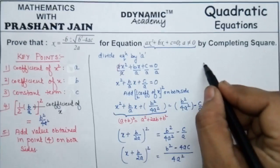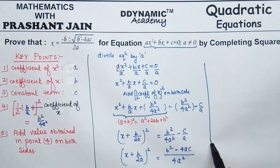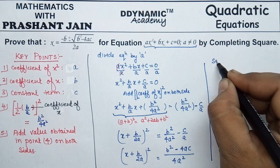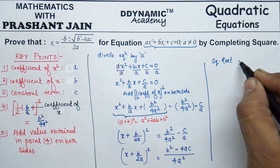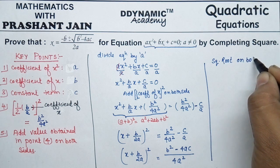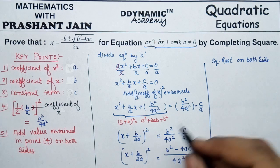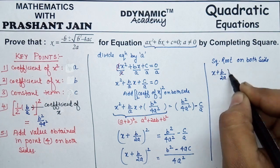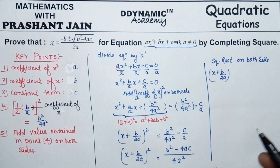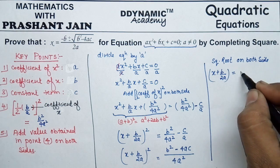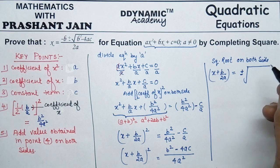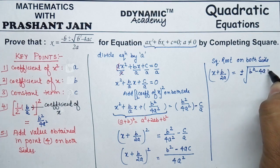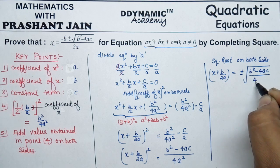In the next step, we take the square root on both sides. Taking the square root, x + b/(2a) on the left becomes isolated, and the right-hand side becomes ±√((b² − 4ac)/(4a²)).